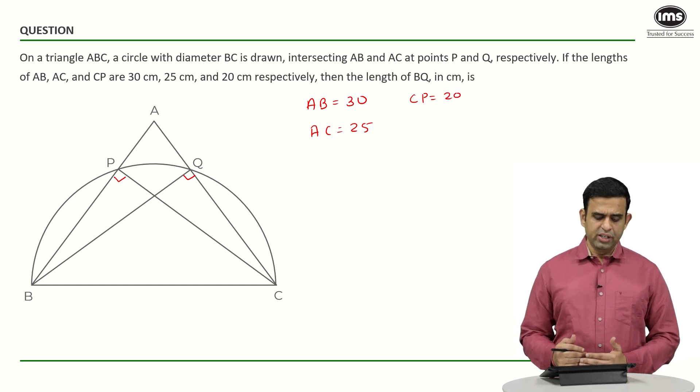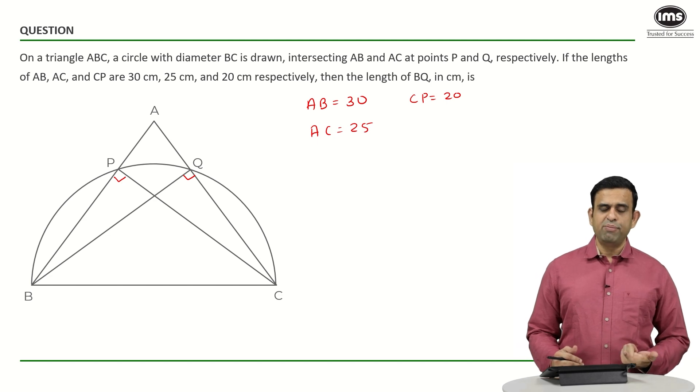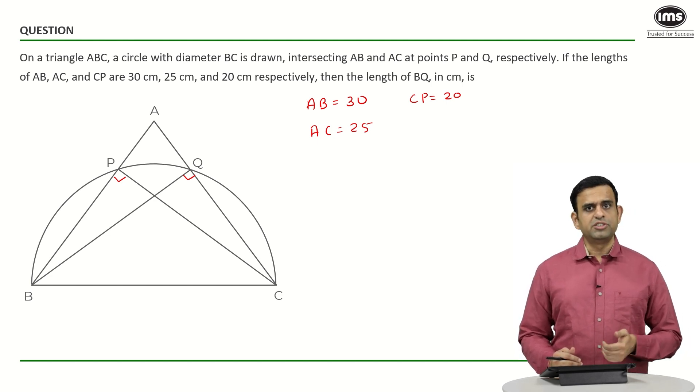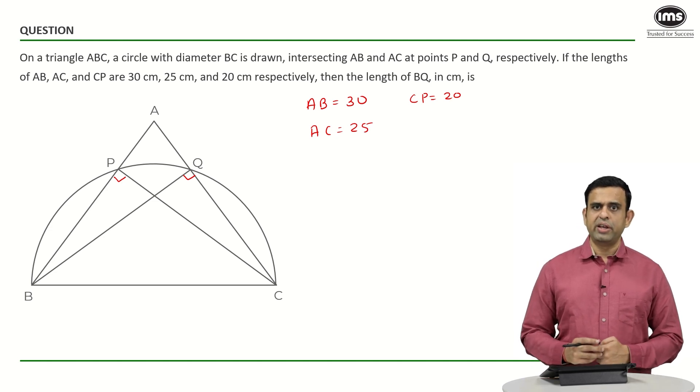For the triangle ABC, if I take the base as AB then the corresponding height becomes CP. Similarly, for the same triangle, if someone takes AC as their base, in that particular case BQ happens to be the height.